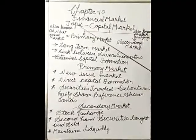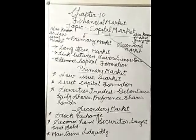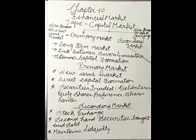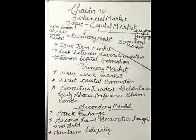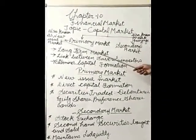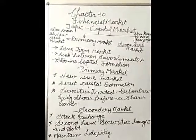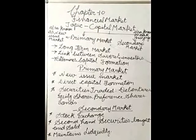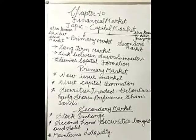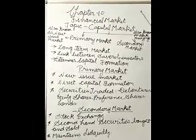We are here today with a new topic: capital market. As you can see, capital market is bifurcated into two parts — that is, primary market and secondary market. Primary market, which is also known as new issue market, is where securities are issued by the company for the first time and bought by the savers. The secondary market is also known as stock exchange, where second-hand securities are traded.